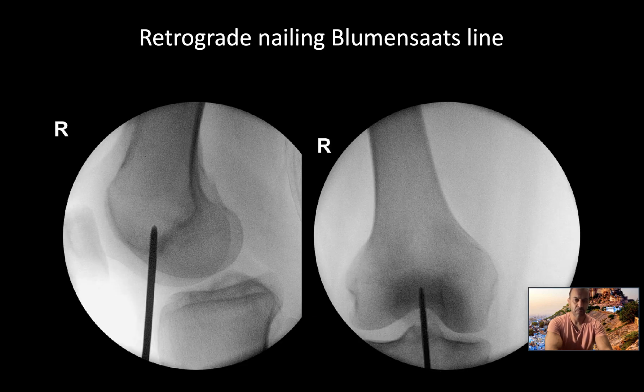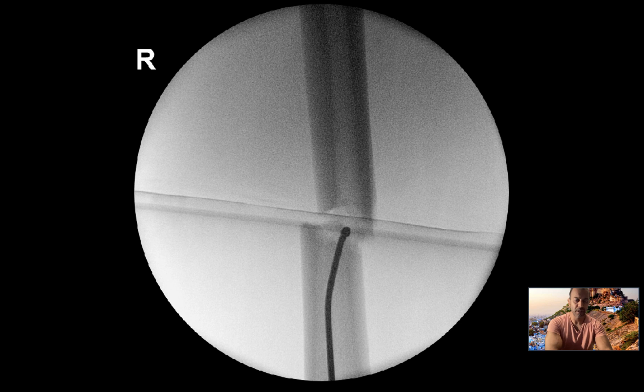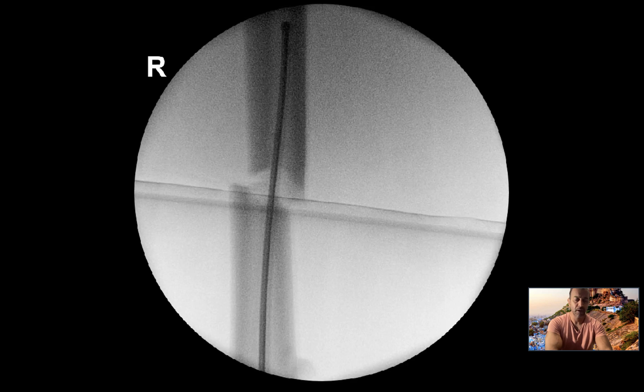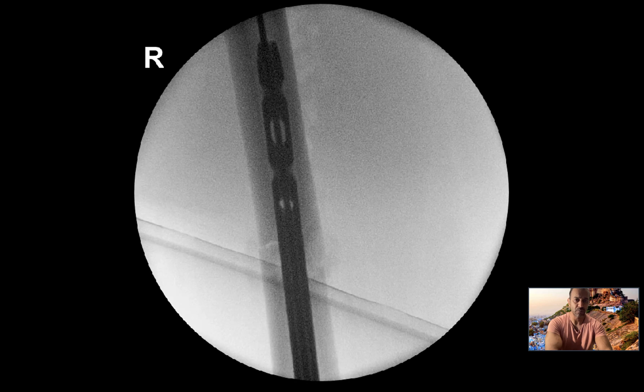Retrograde nailing, Blumensatz line entry point, get the guide wire up, and you've got a bit of deformity to reduce, just give the leg a little wiggle, and it straightens up around the nail.